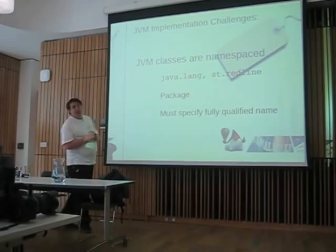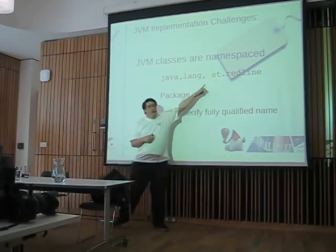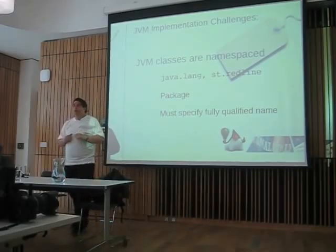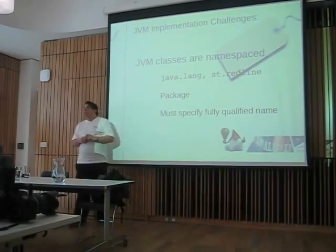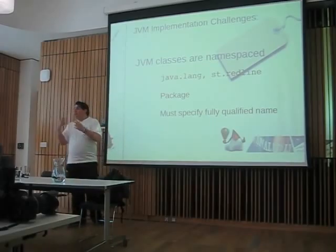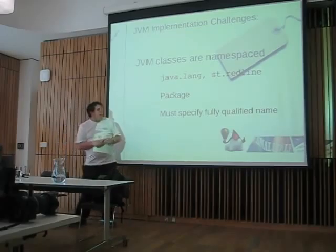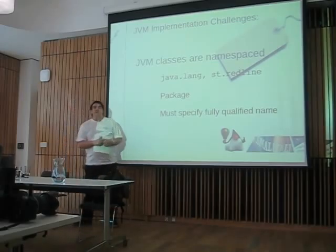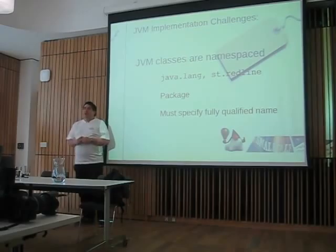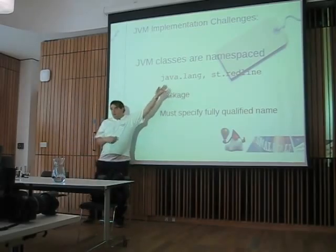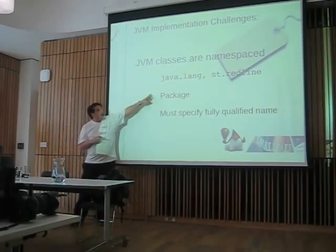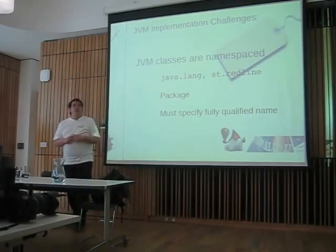All classes are set with a namespace — so java.lang, st.redline are packages. You can avoid name collisions if you want to have a cool Object — you don't need to prefix it with characters that take away from the meaning of your names. But you must specify a fully qualified name to the JVM so it knows which class you're talking about. They're called packages in Java, and I may use the term namespace or package interchangeably.